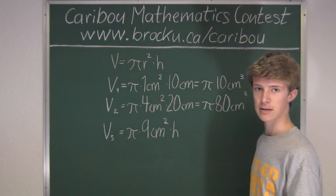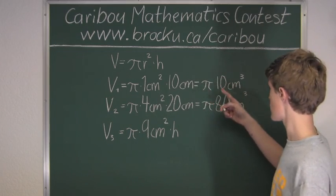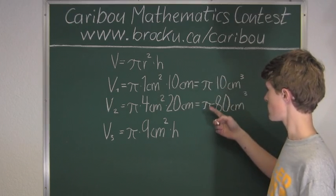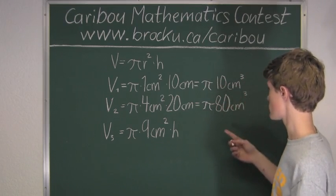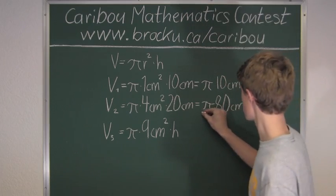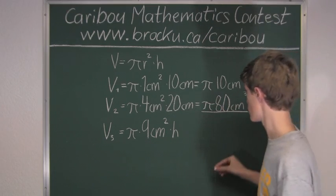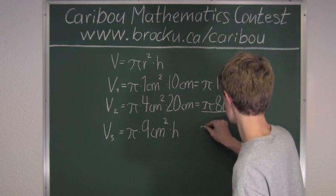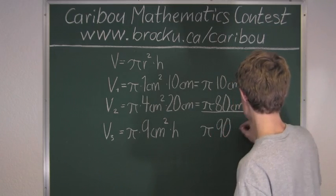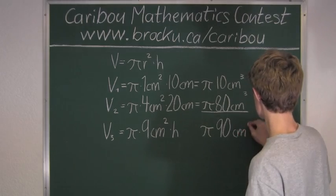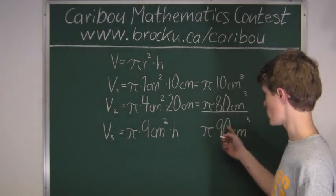Now using the distributive law, we add these two volumes up. We have pi times 10 centimeters cubed plus pi times 80 centimeters cubed, which is pi times 90 centimeters cubed. We know that the volume of the third cylinder must equal this.